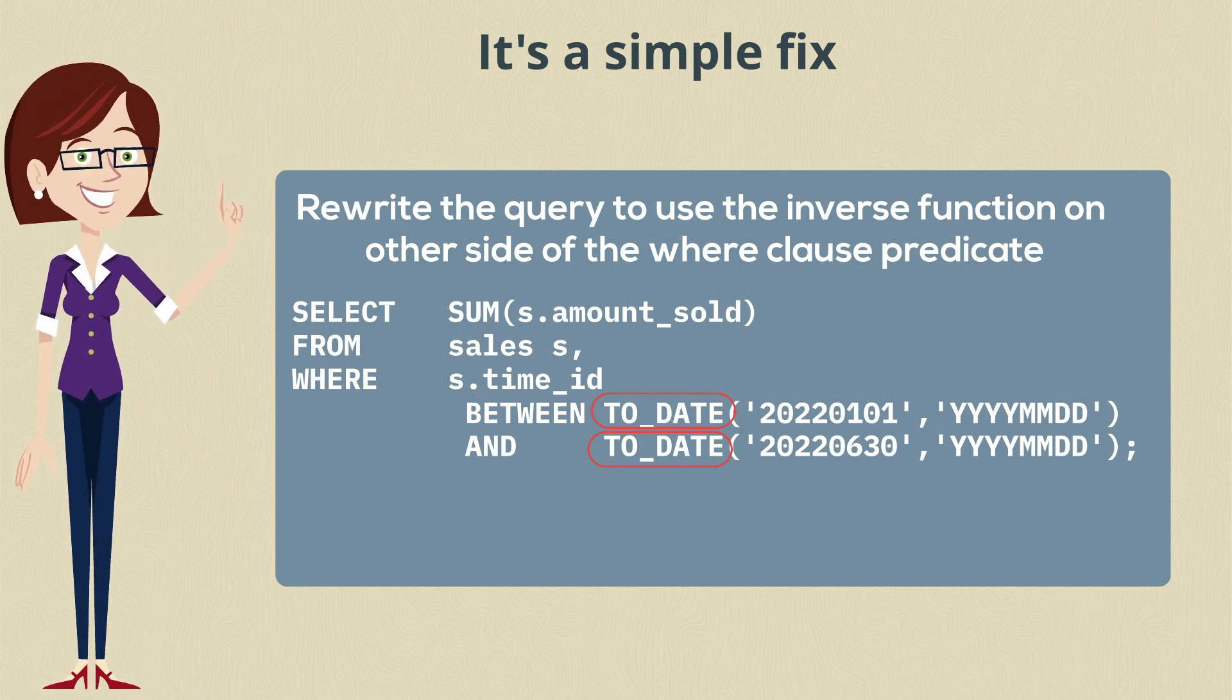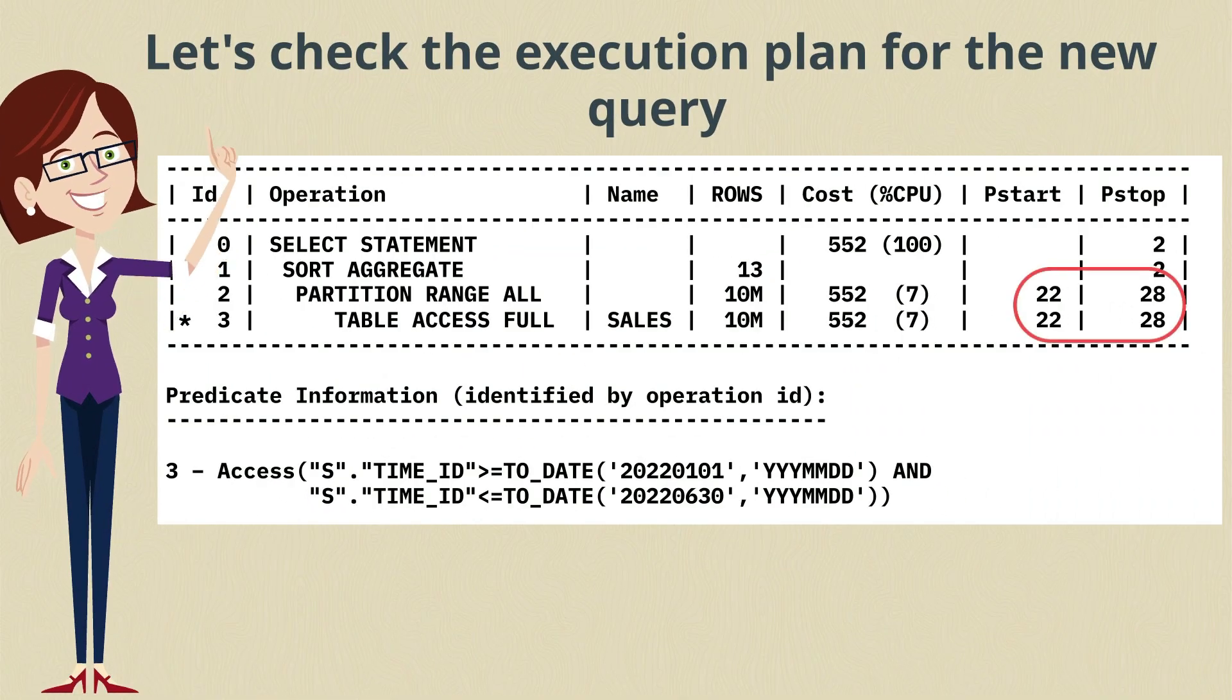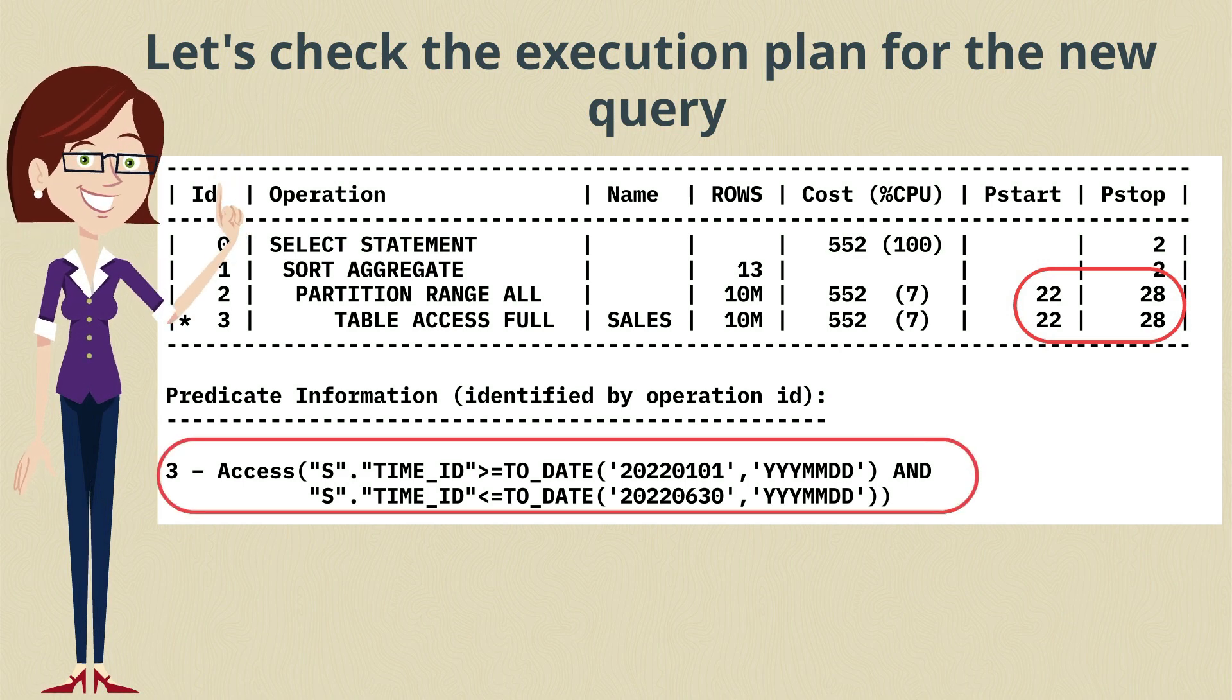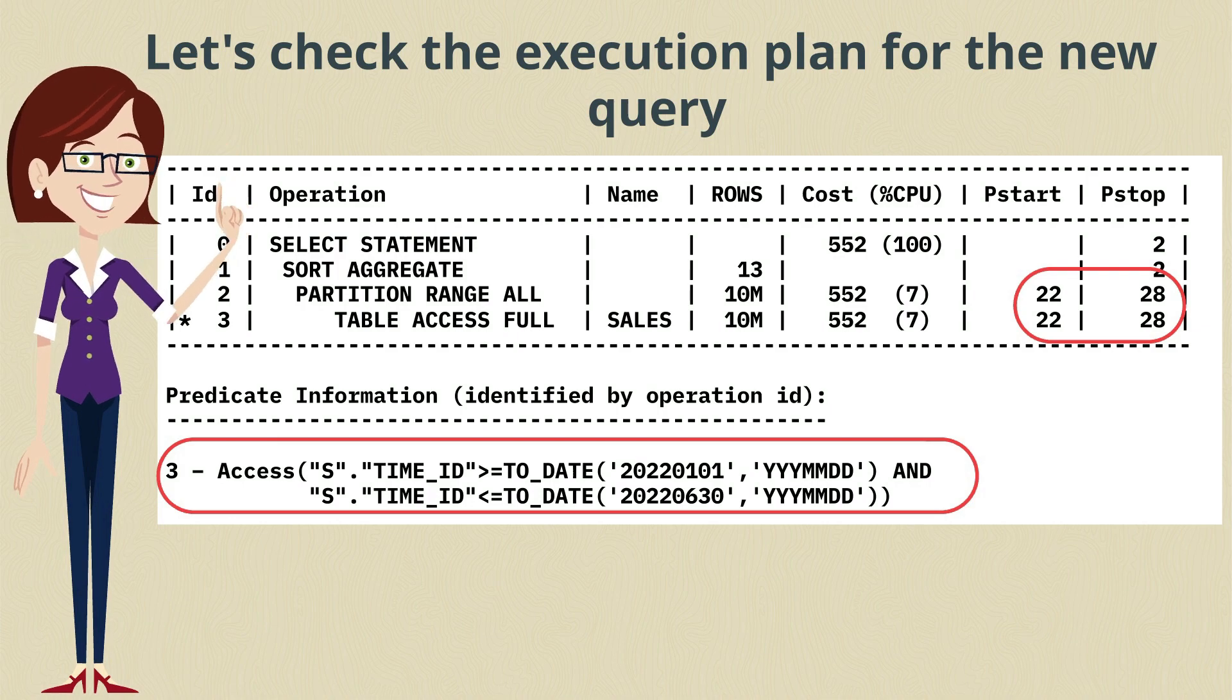Let's take a look at the default plan now. As you can see, we're still doing a full table scan of sales, but if we look in the pStart pStop column, we see that we're accessing just the six partitions we want. And if we look at the predicate information, now our where clause predicate is being used as an access predicate, and there's no internal function being listed there.